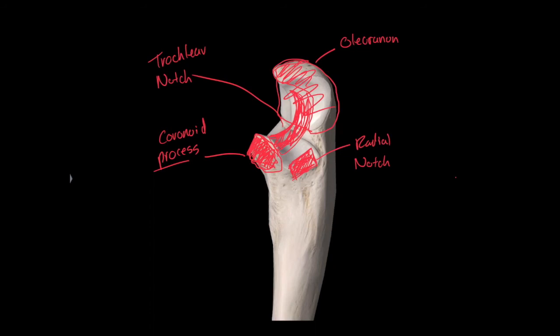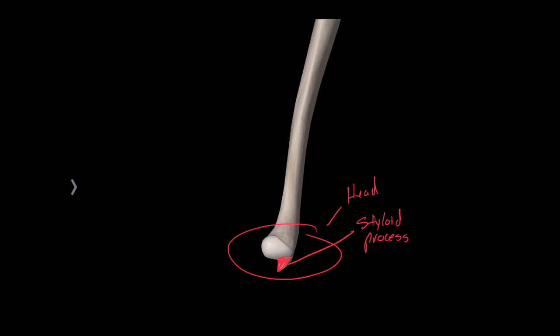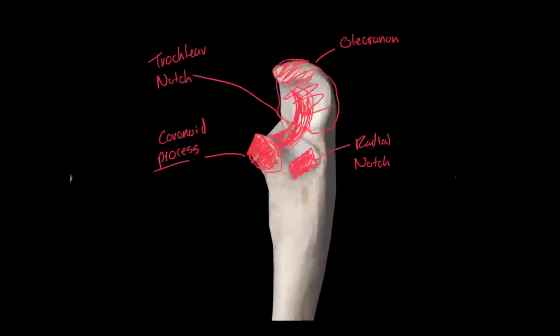Moving down to the distal aspect, we have the head of the ulna. Right here we have this kind of pointy thing — if you hold the ulna like a pencil it would feel like a stylus. So we're going to call this the styloid process of the ulna. Those are all of the landmarks found on the ulna.